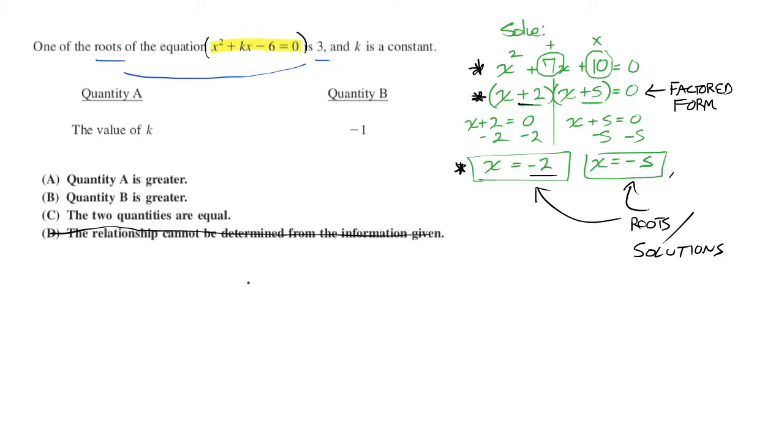Now, what happens if we write out the given equation? x squared plus kx minus 6 equals 0. Well, if I were to try and solve it, I would try and factor it first. I would start with my format of x and x and,